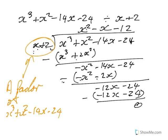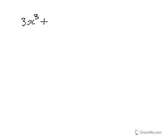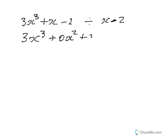The next thing we can look at is synthetic division. Here we've got 3x cubed plus x minus 2, divided by x minus 2. Notice this one doesn't have an x squared term. So to keep track, write it as 3x cubed plus 0x squared plus x minus 2, divided by x minus 2.